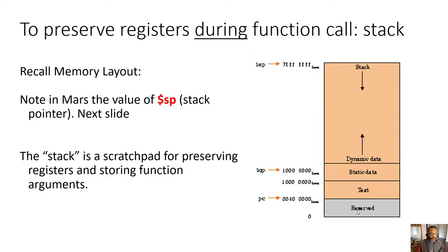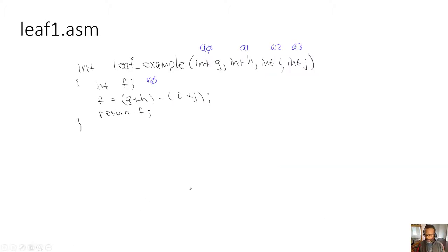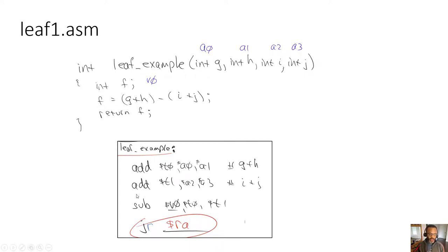But what if we want to call another function from within a function? That creates unique challenges. If a function uses JAL to call another function, the RA register gets overwritten — destroyed. So we would have to save it. Once we use JAL and jump to another function, we need to ensure that when we come back we can restore RA to its original value.